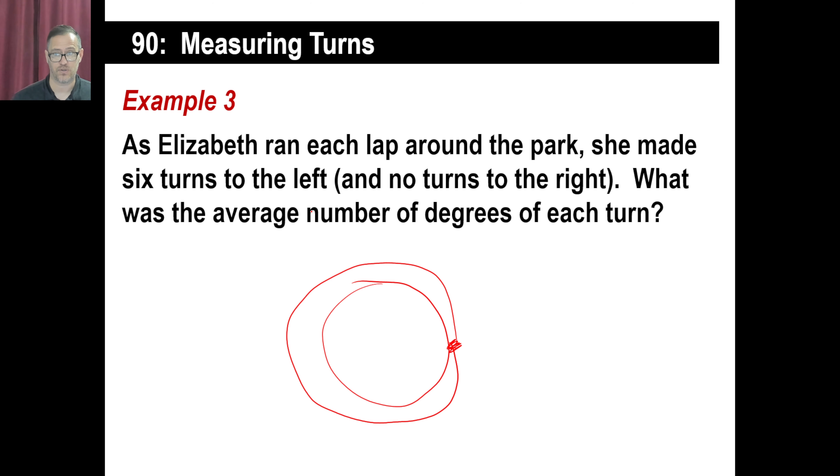Now, if she's done six turns, and they say what's the average number of degrees per turn, all we need to do is go, okay, 360 degrees divided by six. Well, we already know what 36 divided by six is. That's six. So 360 divided by six is 60 degrees. That's the average number of degrees that Elizabeth did for each turn. There we go. That's turns.